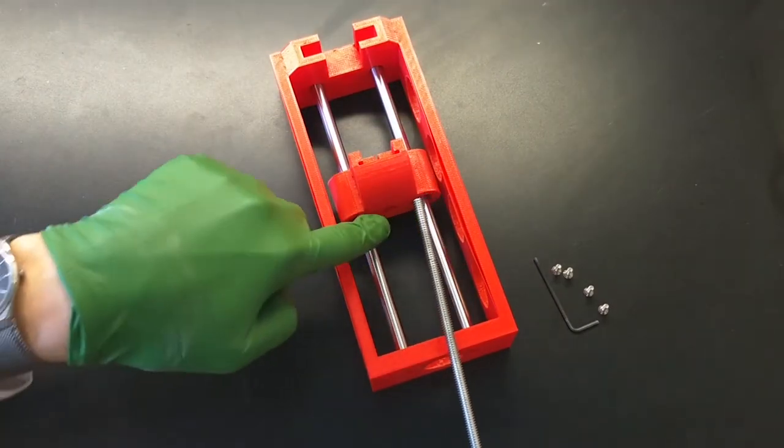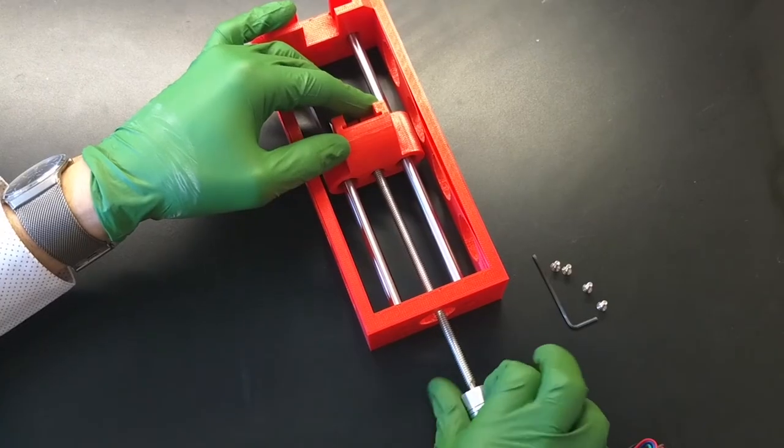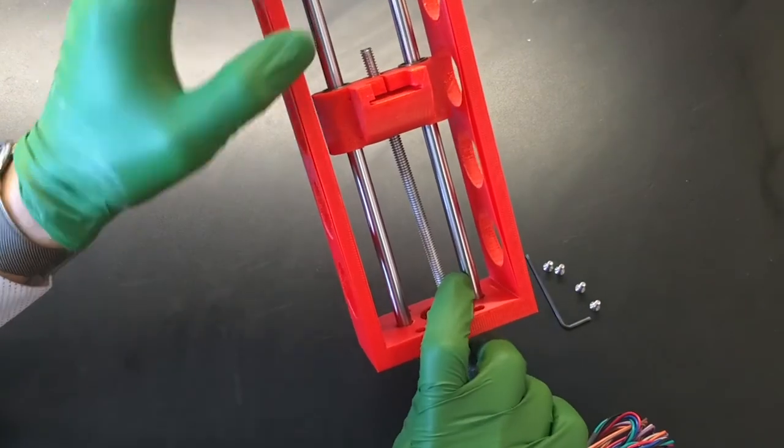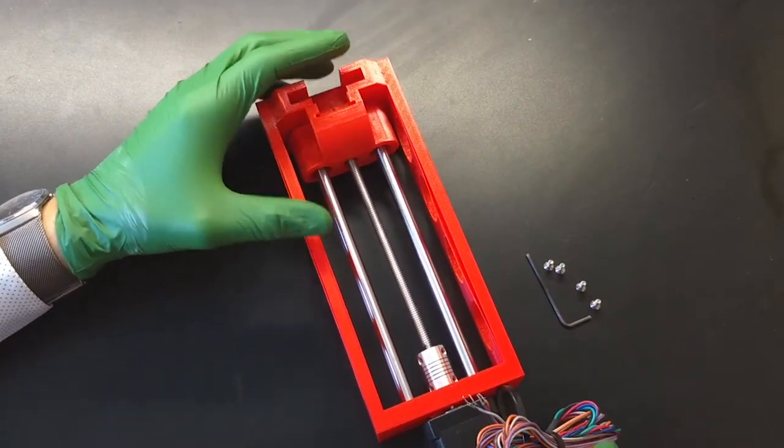Thread the rod through the hex nut inside of the push block. Make sure to extend it a few centimeters through the other end so that the motor can mate to the rear face of the chassis.